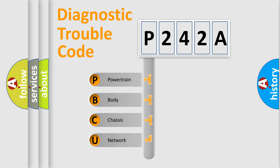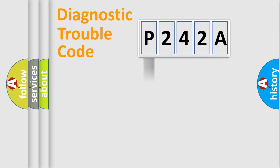We divide the electric system of automobile into four basic units: Powertrain, Body, Chassis, Network. This distribution is defined in the first character code.